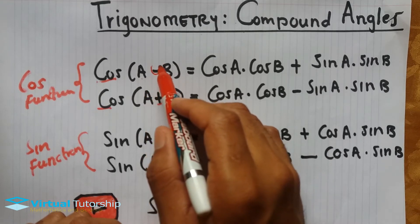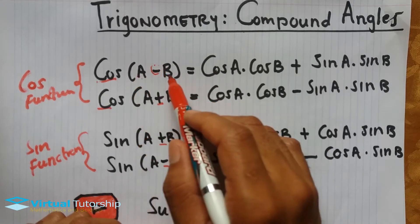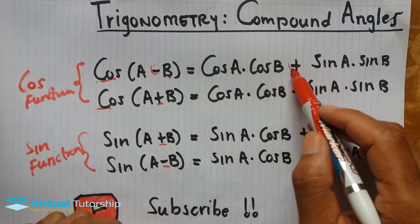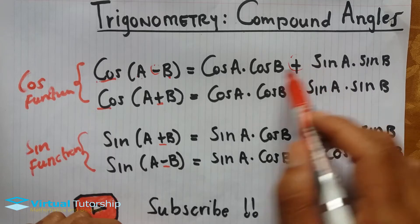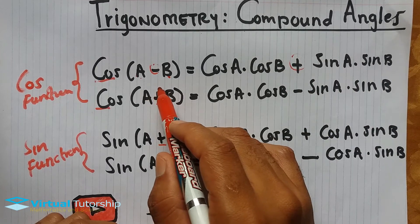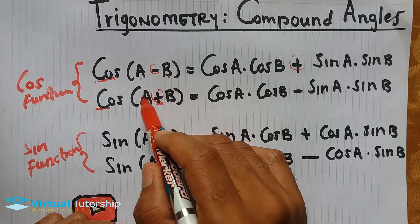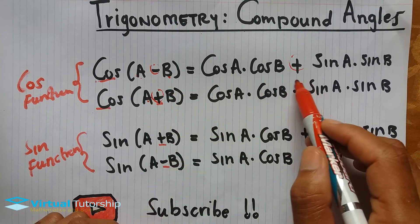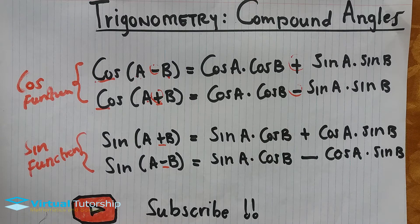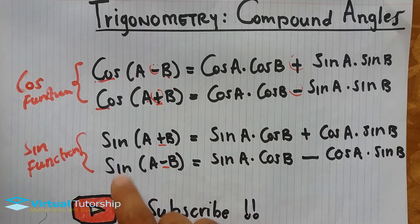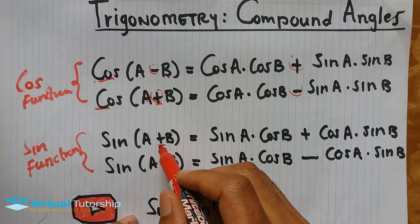Whenever you subtract angle B from angle A, the expression becomes sign A times sign B plus. Then on the second one, when you add the angles, the expression subtracts. So the signs change.